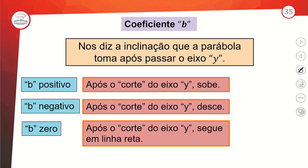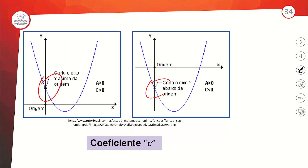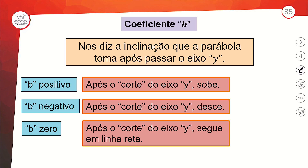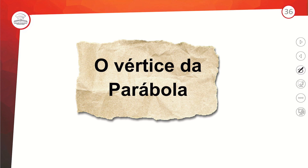B positivo: após o corte do eixo Y, a parábola sobe. B negativo: após o corte do eixo Y, desce. Se se manter meio reto após o corte, significa que o B é zero — a equação é incompleta. A função está sempre buscando o vértice. Uma coisa puxa a outra: a gente tem que lembrar e saber quem é esse vértice.